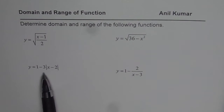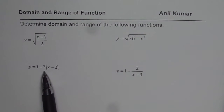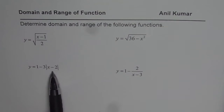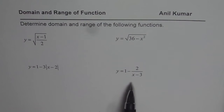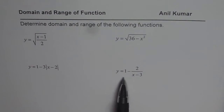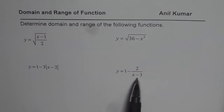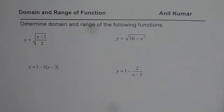We have absolute function y equals 1 minus 3 times the absolute value of (x minus 2). And this one is a reciprocal function y equals negative 1 minus 2 over (x minus 3). You can pause the video, write down the domain and range of these functions, and then we'll move on.